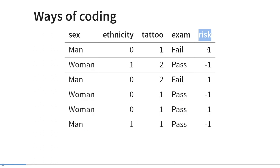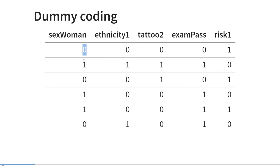Risk of disease has been coded one and minus one, where minus one means low risk and one means high risk. What all of these variables have in common is that they code for a difference between two groups, but the way in which that difference is encoded differs for each variable. To represent the difference between two groups in the general linear model, we have to code all of these variables in the same way. Specifically, we code one group as zero and the other group as one.